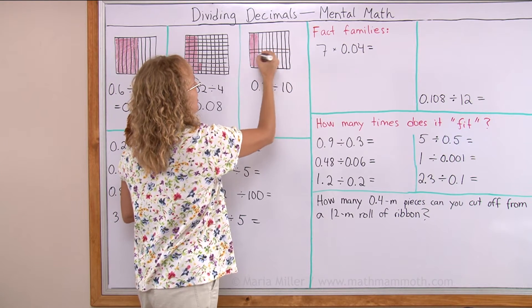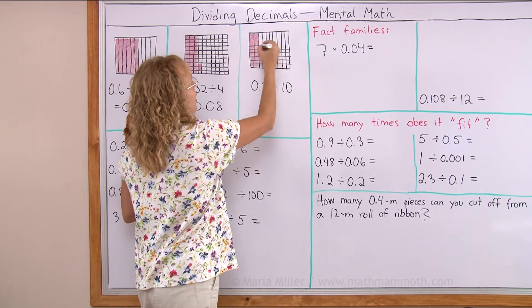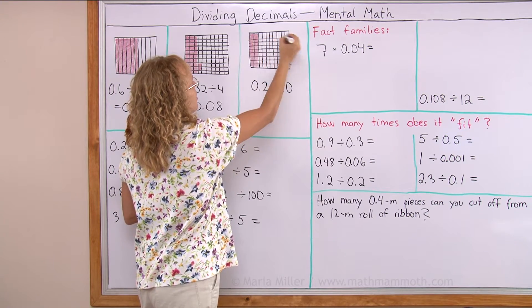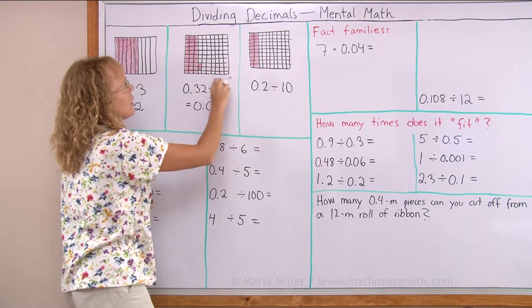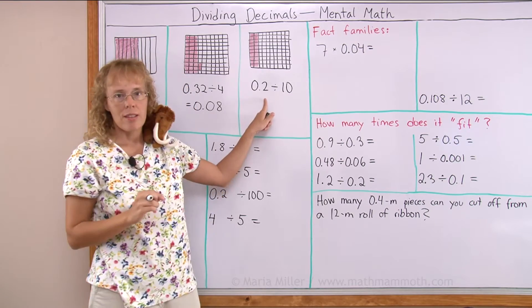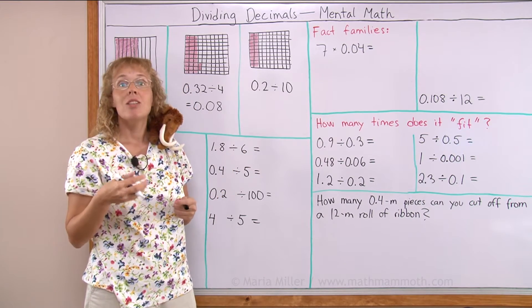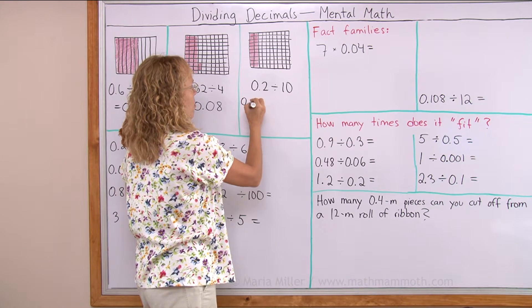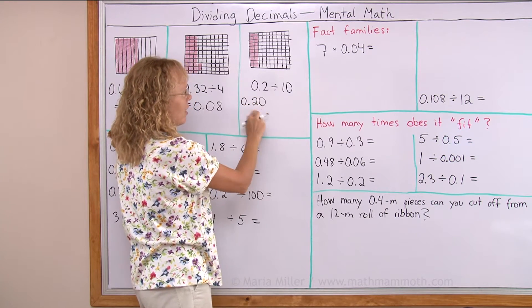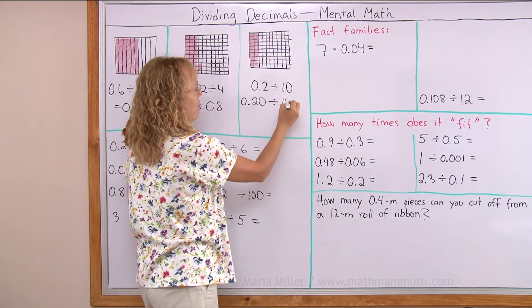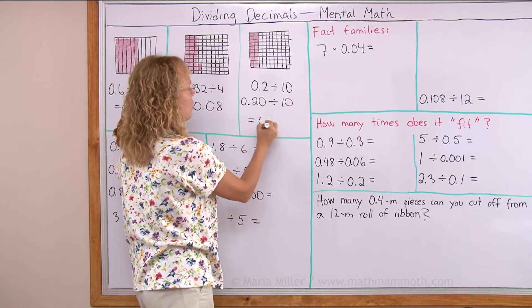I can basically divide this whole thing into hundredths just like it is here, right? So now my two tenths that I colored have become twenty hundredths. So my problem changed to twenty hundredths divided by ten. And now each person would get two hundredths.